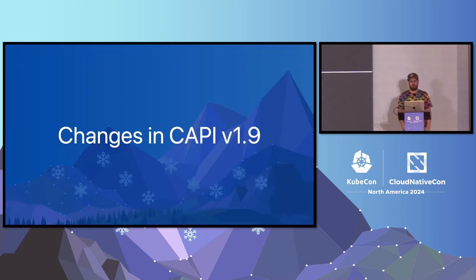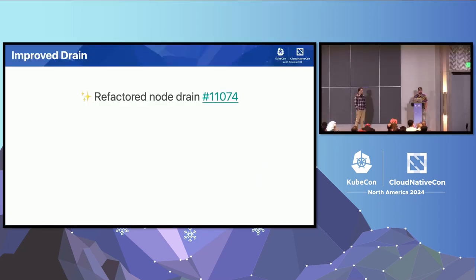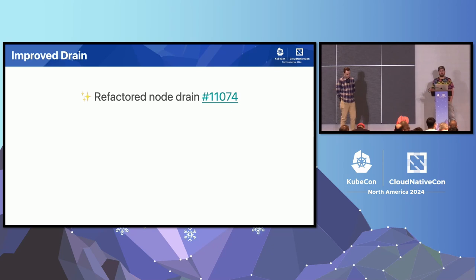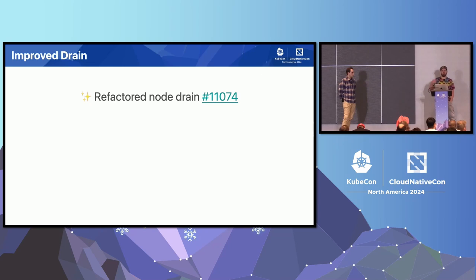Other upcoming changes in the next Cluster API version: we improved our drain behavior in v1.9. Before, we simply used the same approach as kubectl drain — we even used the same functions. But kubectl drain is a CLI and we're running a controller, and it was not written in a way that's good for a controller. We have a retry loop using controller-runtime when removing machines. The old code created lots of goroutines when draining pods — one goroutine per pod — and when removing multiple machines at the same time, this didn't scale very well.